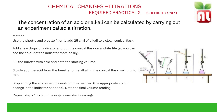Fill the burette with acid and note the starting volume. Slowly add the acid from the burette to the alkali in the conical flask, swirling to mix and allowing all reactant particles to react. Stop adding the acid when the end point is reached and you see the appropriate colour change. Note down the final volume reading — this will be your rough titer. Following this, repeat the above steps. When you near the rough titer volume, start adding the acid dropwise for a more accurate reading of volume. You are then able to take a mean of the titer volumes added, getting a consistent reading.